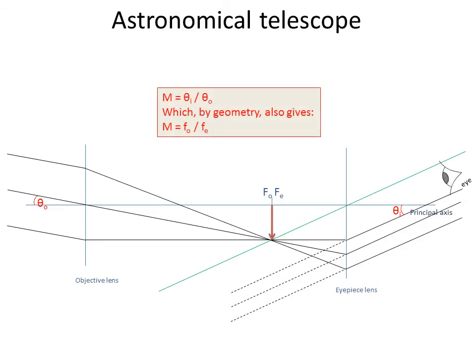And the magnification is theta i over theta o, and by geometry you can show that that is equal to the focal length of the objective over the focal length of the eyepiece. So the magnification of this telescope is about five, about four or five.